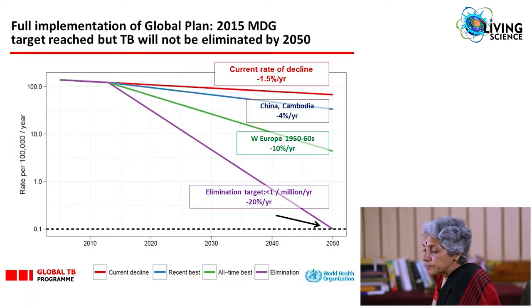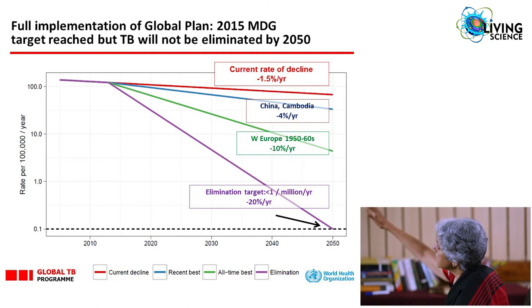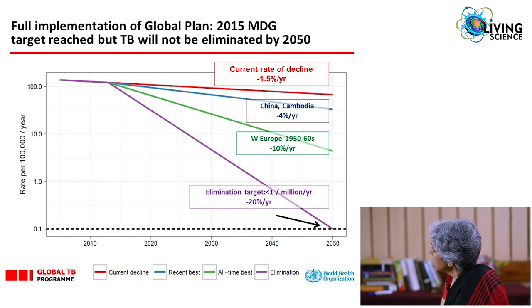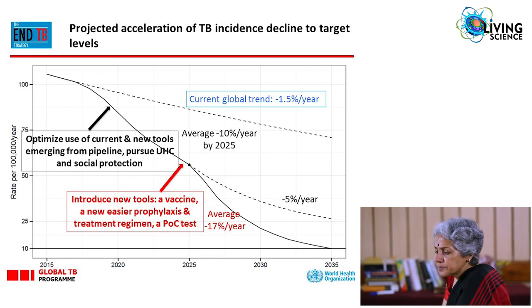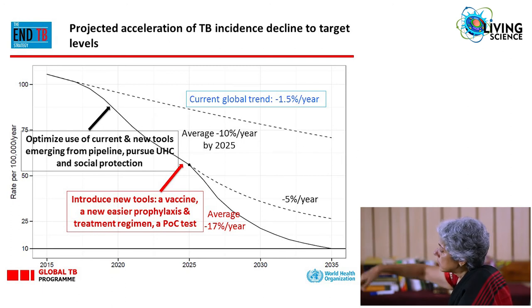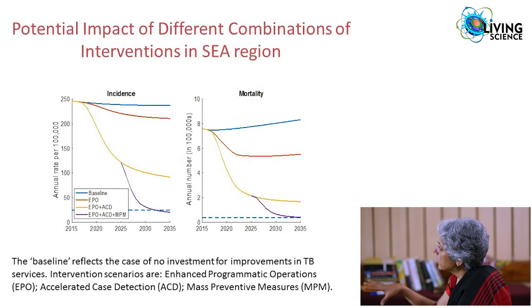Globally, TB has been declining very slowly — at about 1.5 percent per year. To reach an elimination target, we need to achieve more than 20 percent decline per year. Modeling done specifically for the South East Asia region shows the blue line as where we are today, the red line as where we could be with a much better program, and the yellow line as what active case detection in the community could achieve.